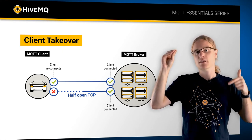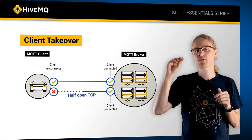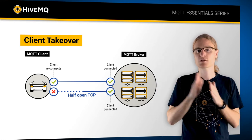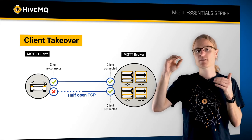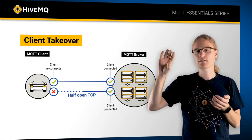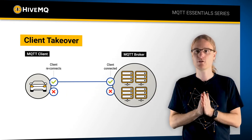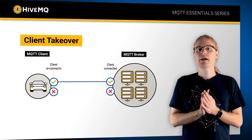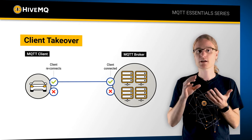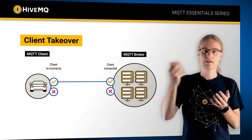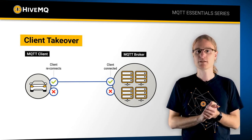In this case, if the client connects again to the broker, the broker sees a second client with the same client ID — which is set in the connect packet — wanting to connect. The existing connected client then gets disconnected by the broker and the fresh new client takes over. This is called client takeover, and it is a very important feature because if a client is stuck, it can reconnect, and the old session which is no longer valid gets cleaned up.